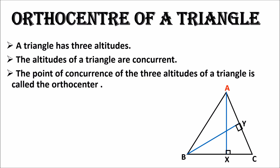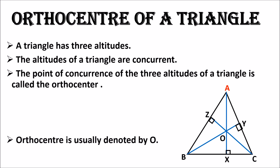So seg AX, seg BY, and seg CZ are the three altitudes of triangle ABC. You can see that they meet each other at one and only one point, and that point is O. The ortho center is usually denoted by O. So the ortho center is the point where all three altitudes meet each other.